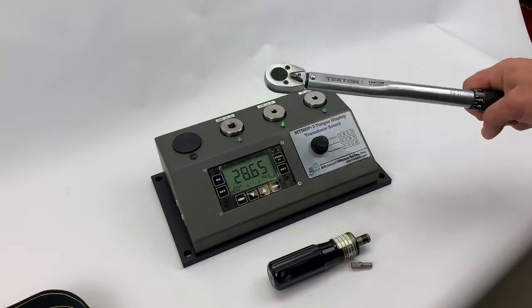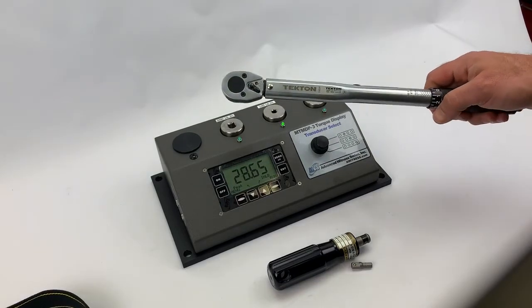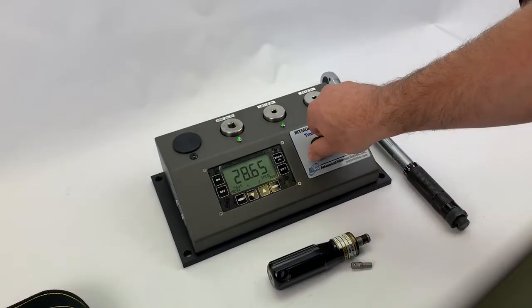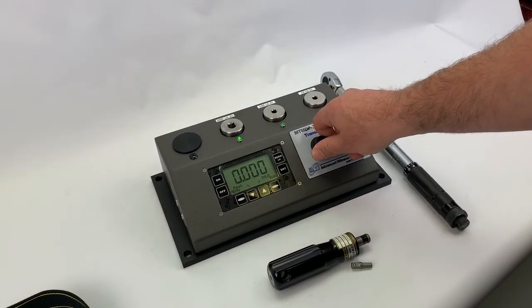If I wanted to then check this click wrench, I would switch it to the larger transducer.